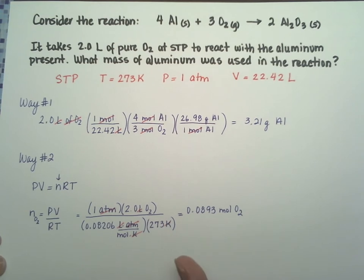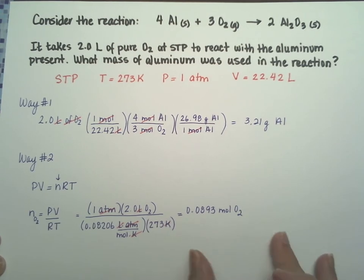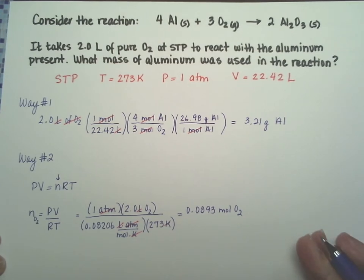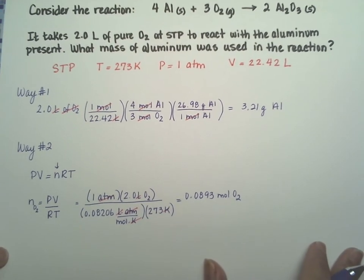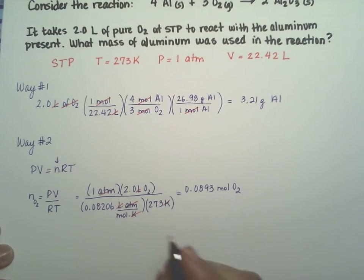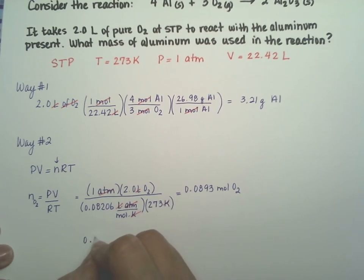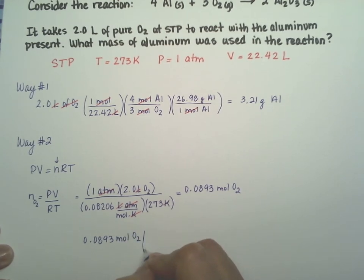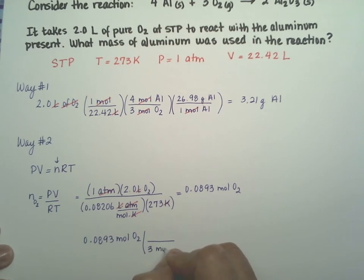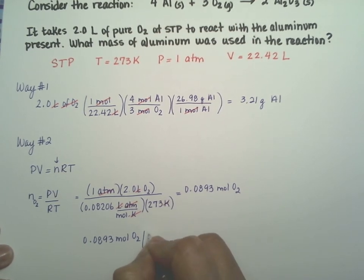Well, great. We're almost there. Now I have the moles of oxygen and I have my equation. I need the conversion factor. So I'm going to go ahead and slide this a little bit higher. 0.0893 moles of oxygen. From the equation, we know that 3 moles of oxygen react with 4 moles of aluminum.